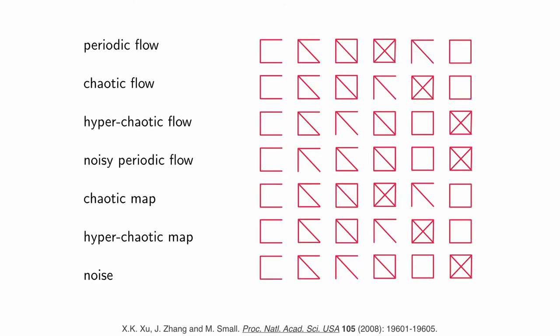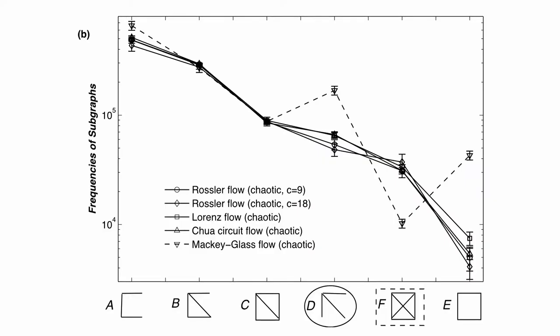This is one of the unsatisfactory things about this method. I'm doing a sampling, so everything is essentially a map because I've got discrete states. Yet, if the map is generated by a chaotic flow or by a chaotic map, they do look different from each other.